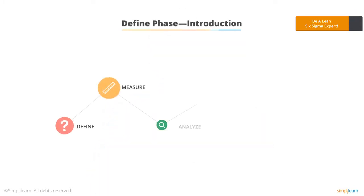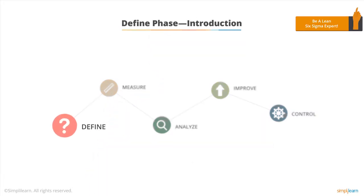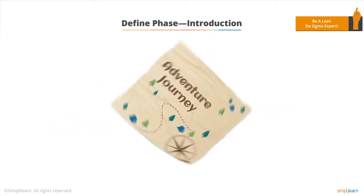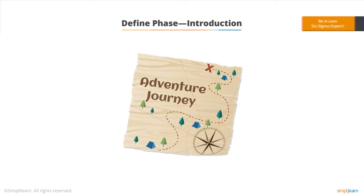Welcome to the Define lesson of Simply Learn's Lean Six Sigma Green Belt certification course. The Define phase is the first phase of a project that follows the Lean Six Sigma process. The main purpose of Define is to describe the goal of the project and the steps required to get there. It's like going on a journey and placing an X on the map to indicate the desired final destination.